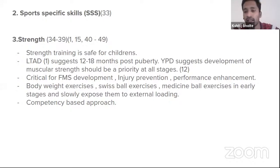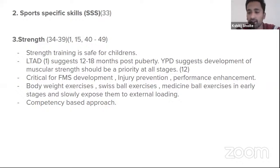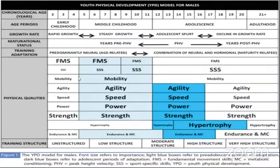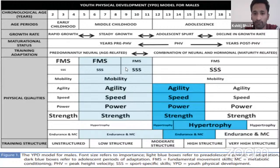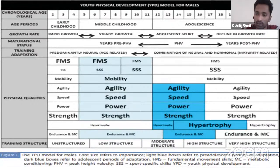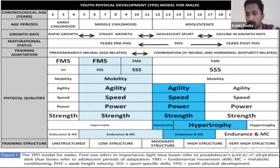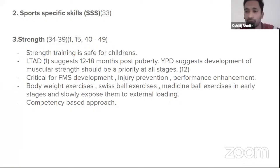For sport-specific skills, every sport has its own — boxing, hockey, athletics — so these are not detailed here. The key message from the YPD model is that sport-specific skills receive less emphasis in early stages. After age 9–10, athletes may begin focusing on one or two sports, and that sport's coach will develop those specific skills. Bailey and Hamilton clearly state that for late specialization sports, sport-specific skill training should not begin before age 10.